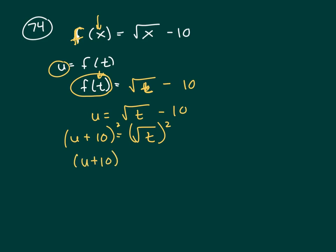So u plus 10 squared, our answers are not squared out, equals, well when you square a square root, it just gives you what's underneath, so that leaves me t.